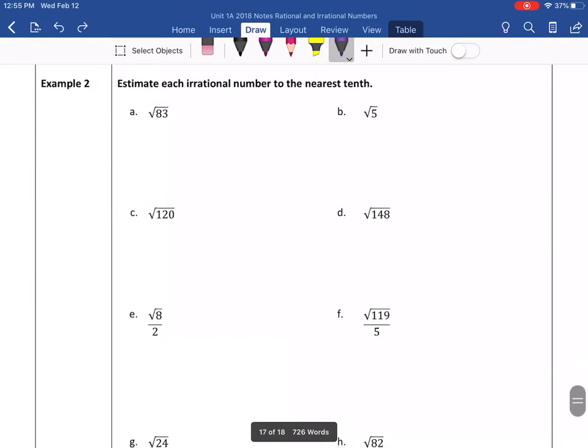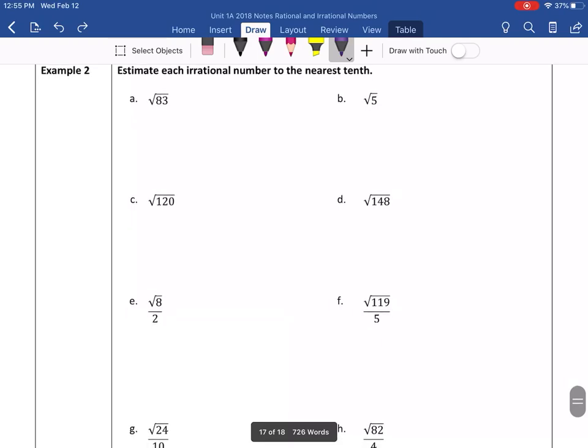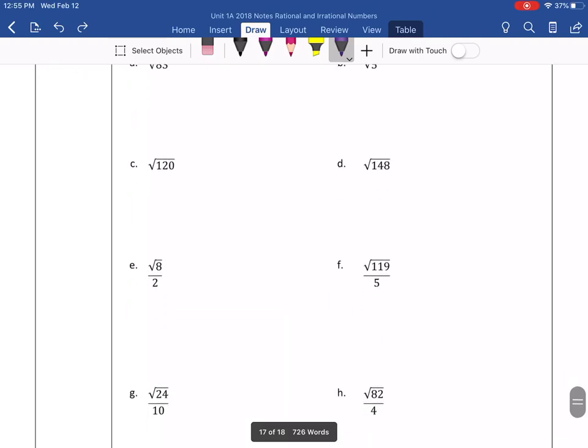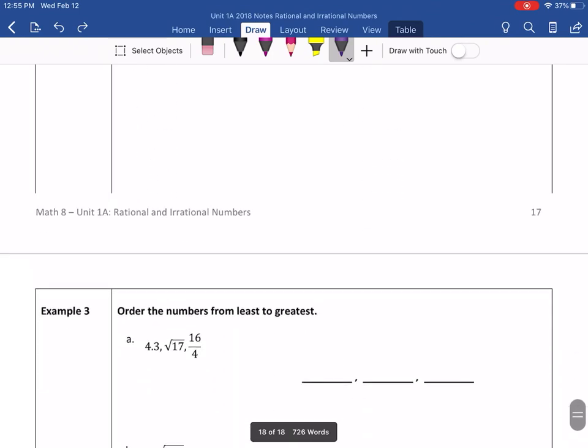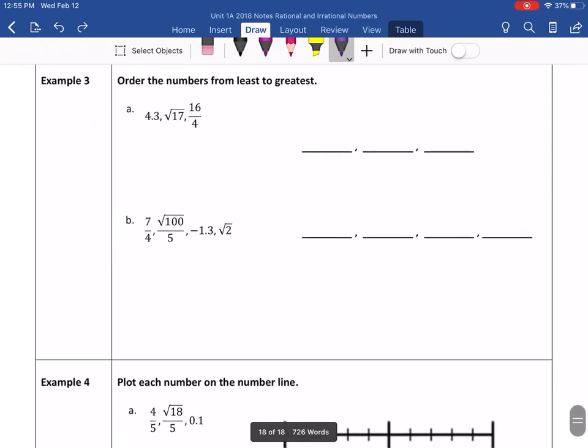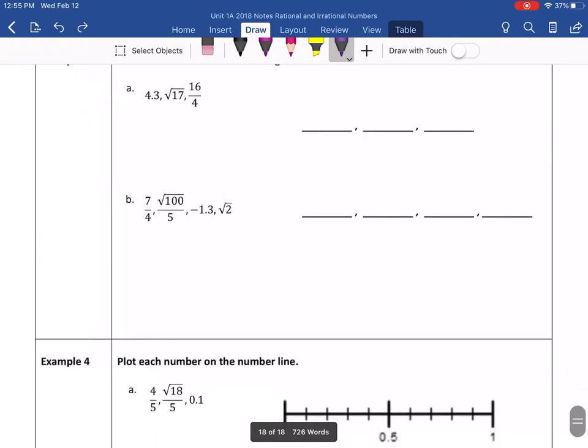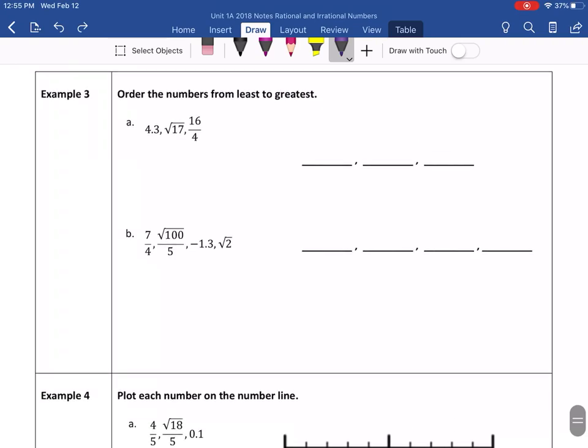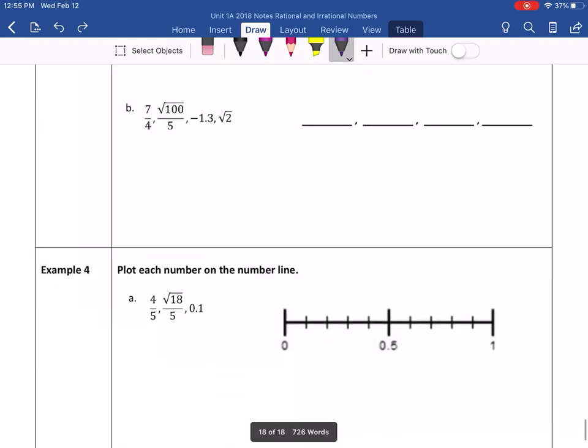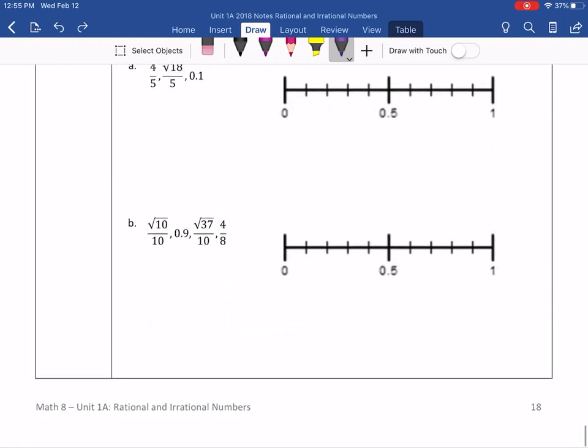Day two, we're going to be going over rounding irrational numbers to the nearest tenth. And then on day three, we will learn how to order these - some are rational, but some are irrational numbers - in order from least to greatest. And then also to know how to put them on a number line.